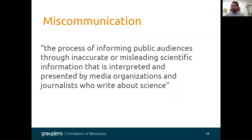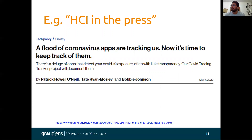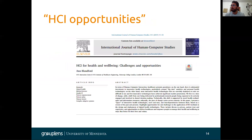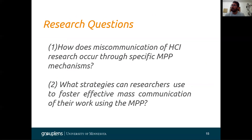To do this, we examine the social-technical interaction using the media production pipeline that involves community stakeholders with different goals and roles, who use a variety of technologies to communicate science to the public. Our research questions are: how does miscommunication of HCI research occur through a specific media production pipeline mechanism? And what strategies can researchers use to foster effective mass communication of their work using the MPP?